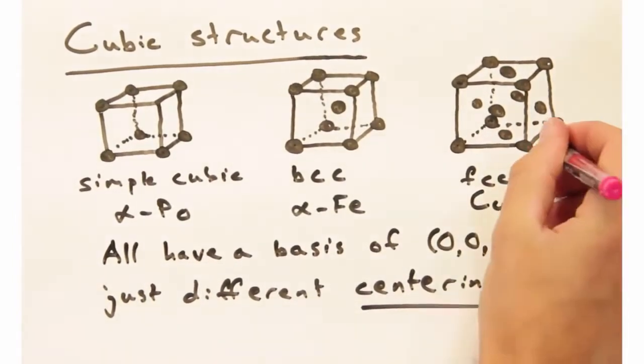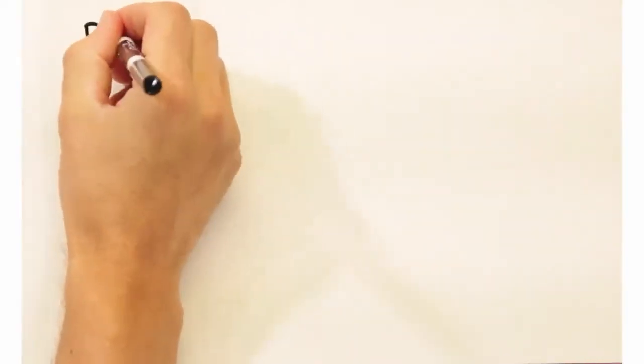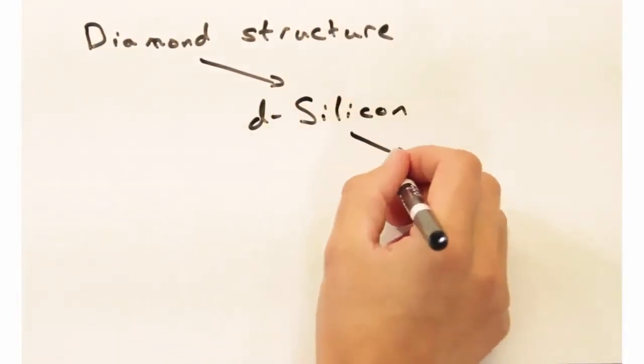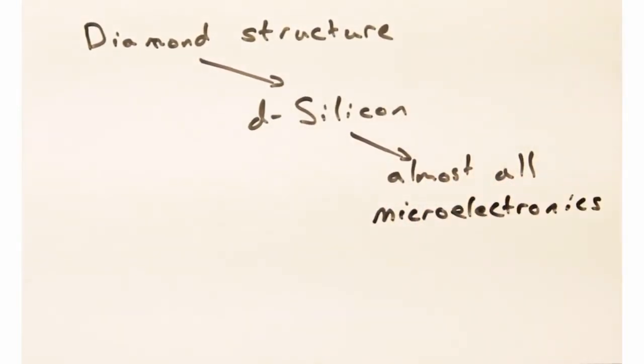It's also worth talking more about the FCC structure, since it's similar to the diamond structure, which is arguably one of the most important structures in solid state. Why diamond in particular? So we're interested in the diamond structure because silicon, which forms the basis of virtually all of microelectronics in the last 60 years, also forms in the diamond structure.